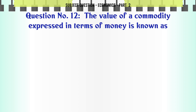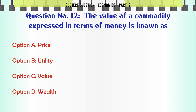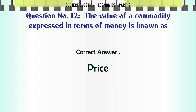The value of a commodity expressed in terms of money is known as: A. Price. B. Utility. C. Value. D. Wealth. The correct answer is: Price.